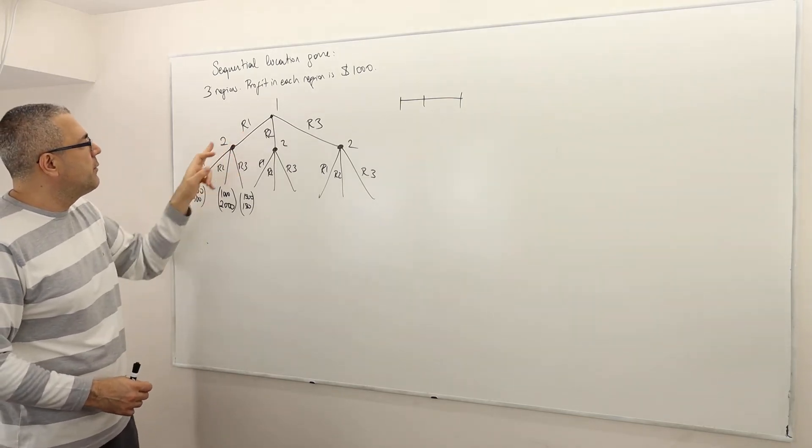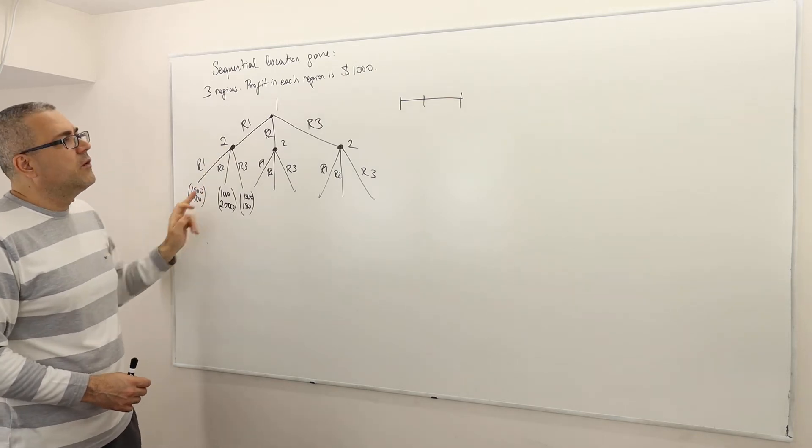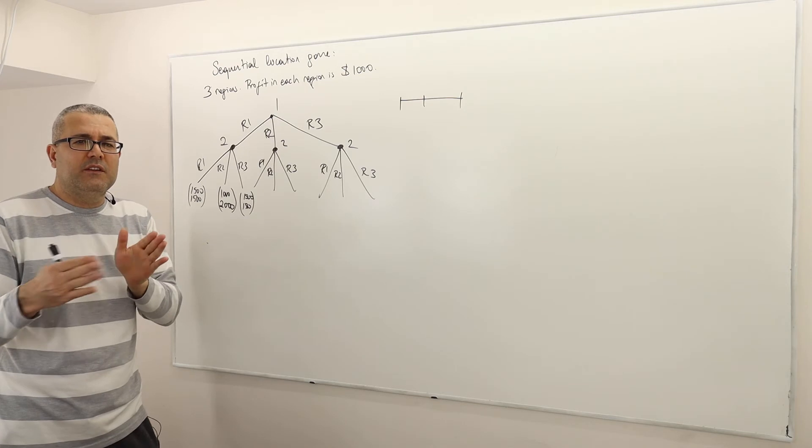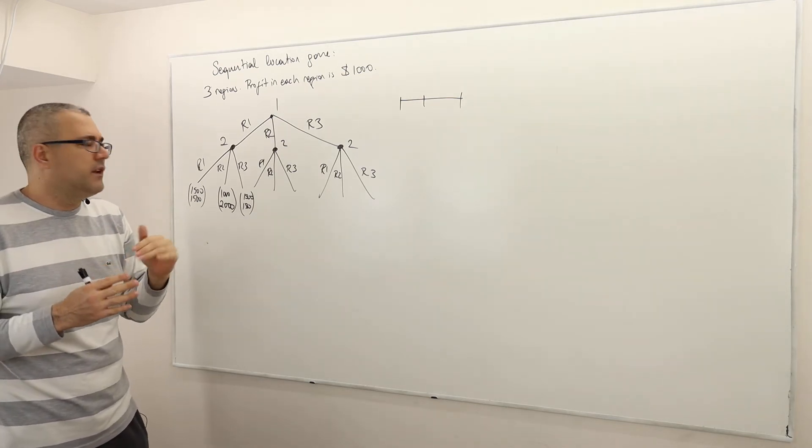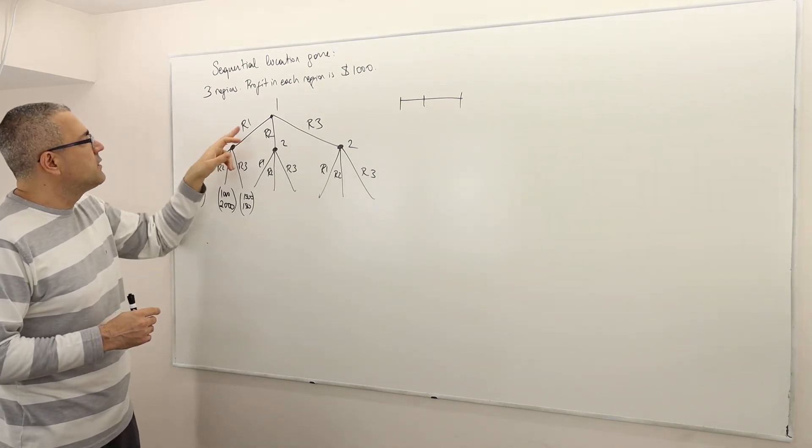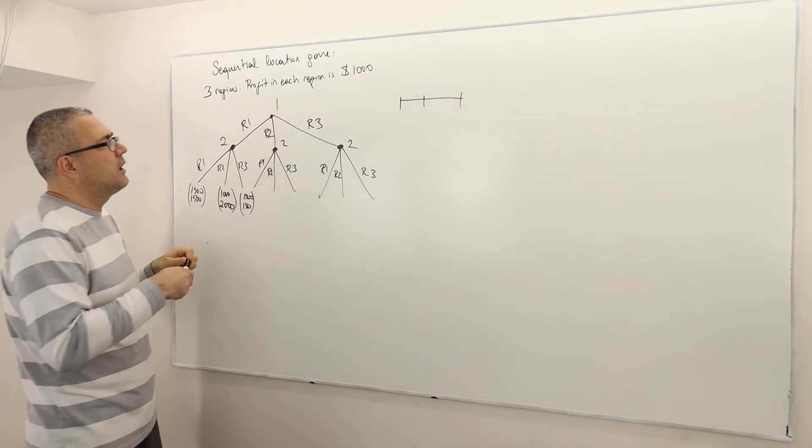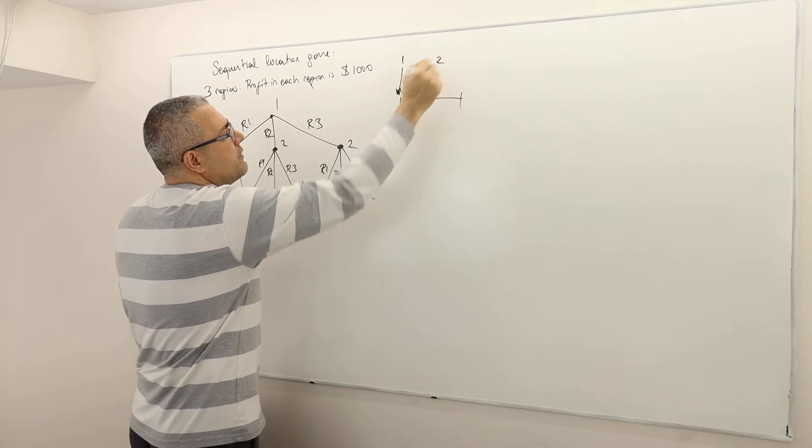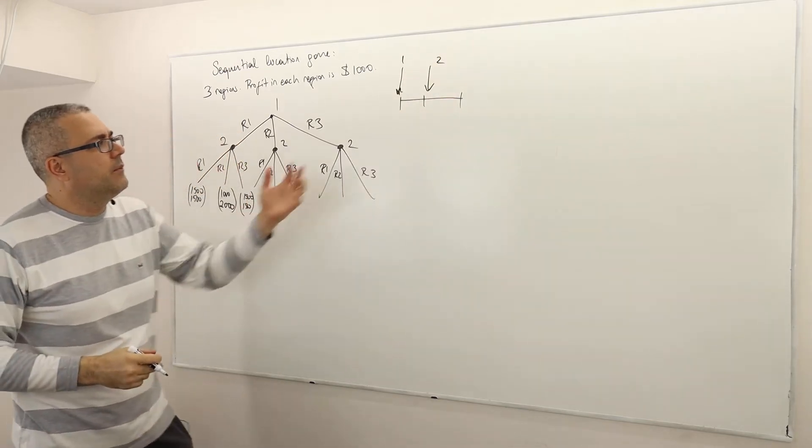So for example, if they both choose R1 and R1, what does that mean? That means they're located in the same position, and hence they're going to split the market profit equally, so $1,500, $1,500. So suppose here player one chooses R1, so this location, and firm two is choosing this location.